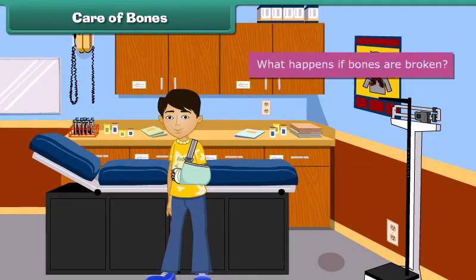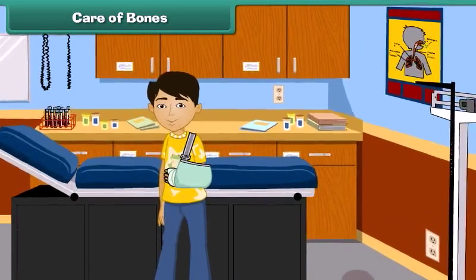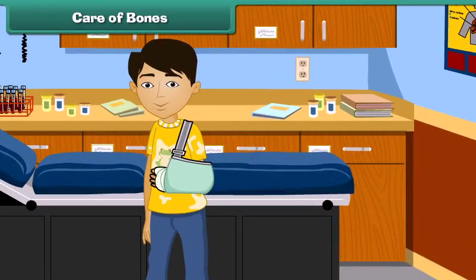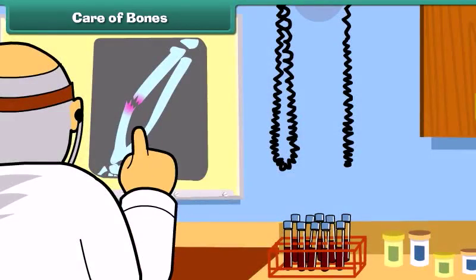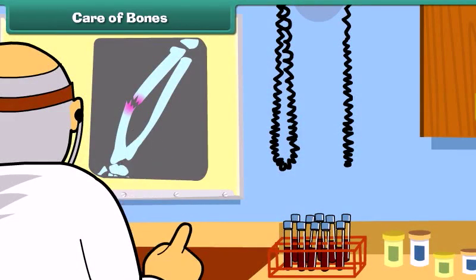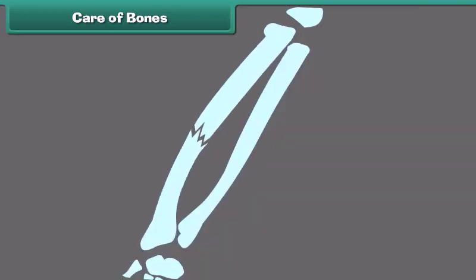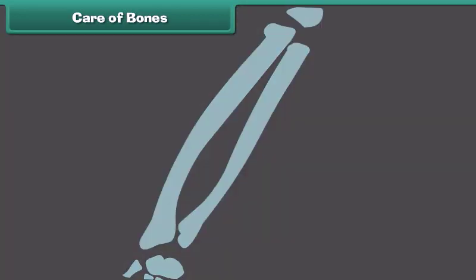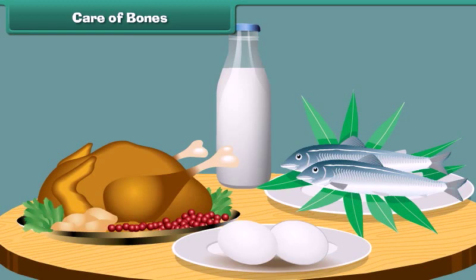What happens if bones are broken? Is it possible to join them? The broken bones can be joined with the help of plaster. The plaster gives the bones support from outside. For the growth and repair of bones, we must eat plenty of protein-rich foods.